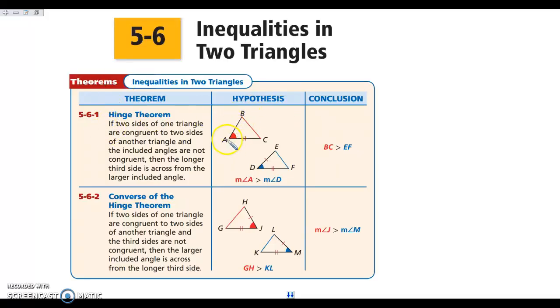Notice that these two sides are congruent and these two sides are congruent. That is going to be true in everything that we do today when we compare two triangles. Two sides will have to be the same length. So what our hinge theorem says is that if I know that angle A is bigger than angle B, then the side across from angle A has to be bigger than the side across from angle B.